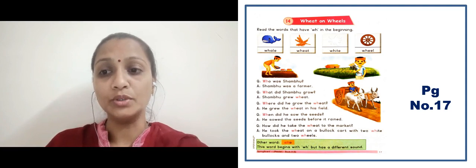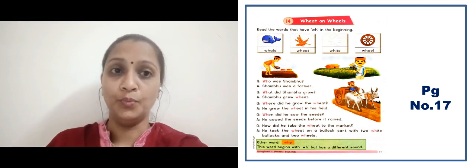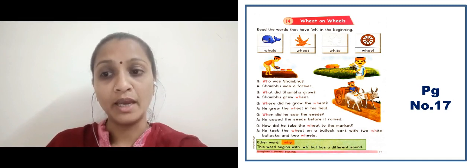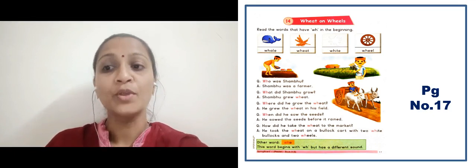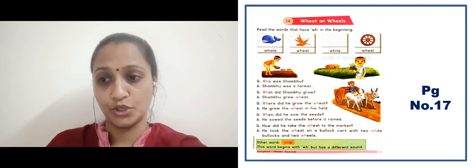How did he take the wheat to the market? He took the wheat on the bullock cart with two white bullocks and two wheels — unhone gehun ko bullock cart mein rakha. Aur woh bullock cart kaisa tha? Jiske andar two white color ke bullocks the aur two wheels the — aur uske upar rakhke, bullock cart mein rakhke, unhone market tak pohunchaya.